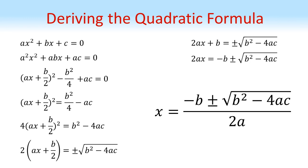which gives us the quadratic formula: x equals minus b plus or minus the square root of b squared minus four ac all over two a.